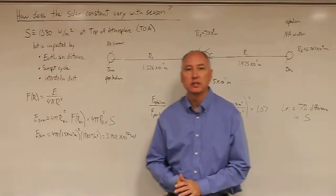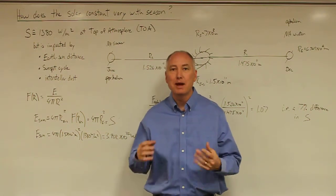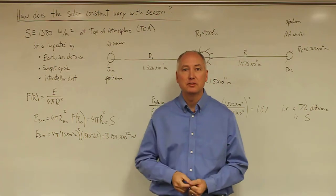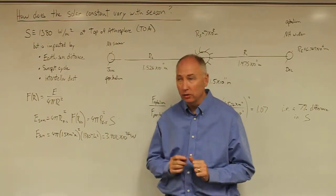In this lecture, we're going to introduce the concept of the solar constant, which refers to the amount of solar radiation that the Earth receives at the top of the atmosphere from the sun in terms of its irradiance in watts per meter squared.